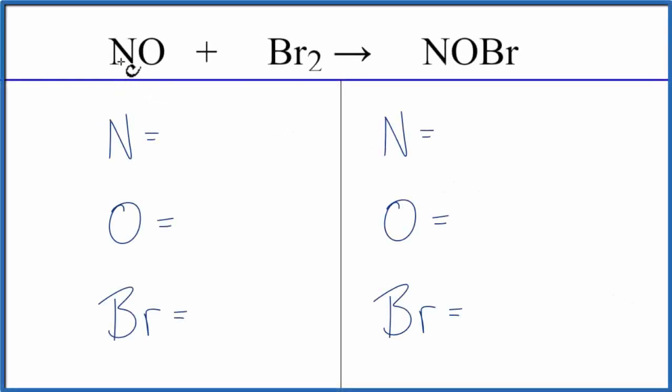In this video, we'll balance the equation for NO plus Br2 gives us NOBr. Let's count the atoms up. We have 1 Nitrogen, 1 Oxygen, and 2 Bromines.